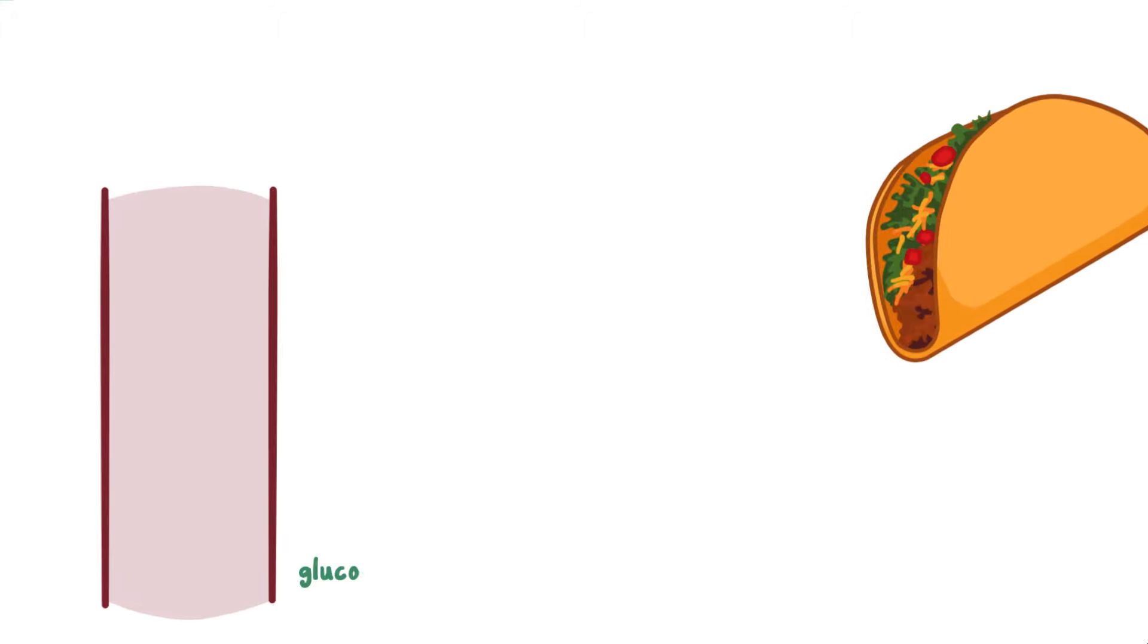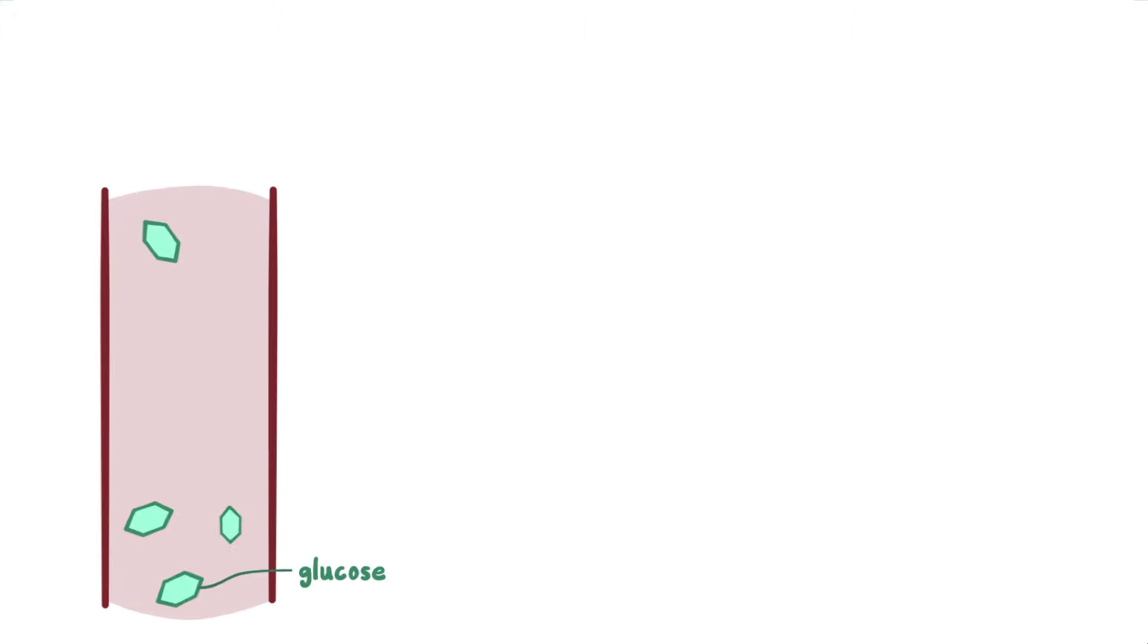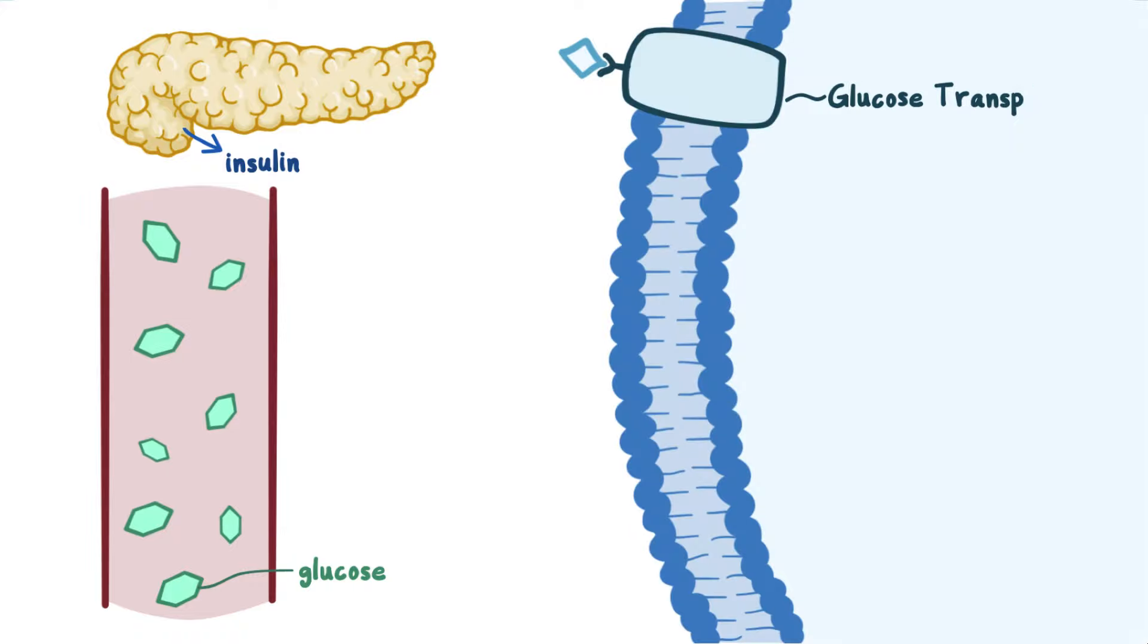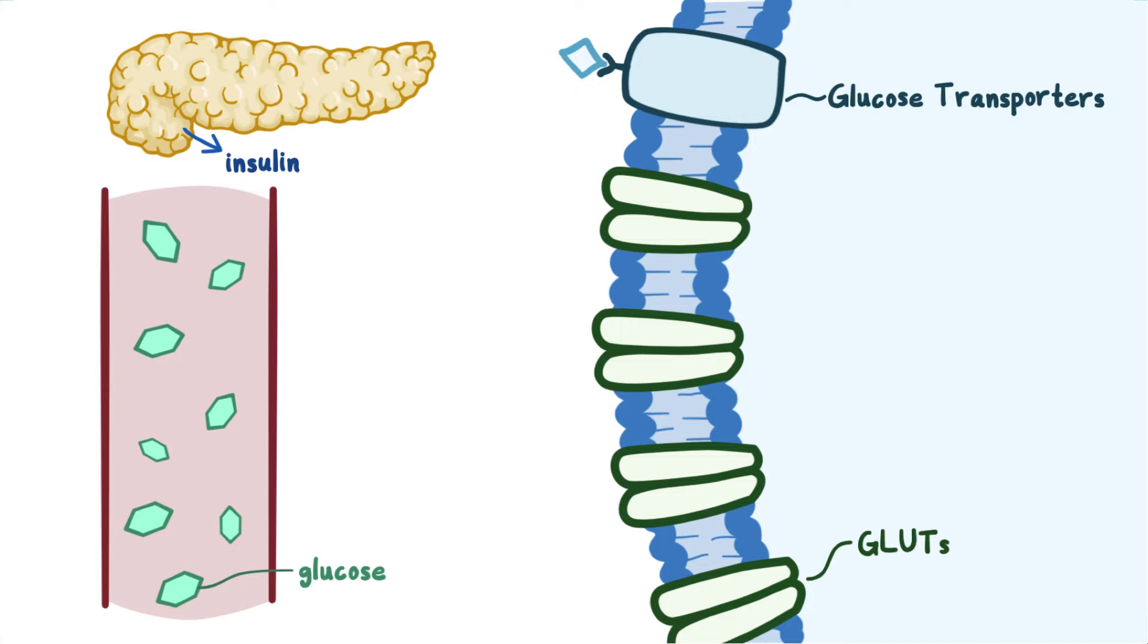Now let's say that you just wrapped up a delicious lunch. You had tacos. Glucose is absorbed from the intestine and that causes our blood sugar to go up. The pancreas responds to high blood sugar by secreting insulin. Insulin acts on glucose transporters on the cell membrane, which are called glutes, and makes them bring more glucose into all cells in our body.